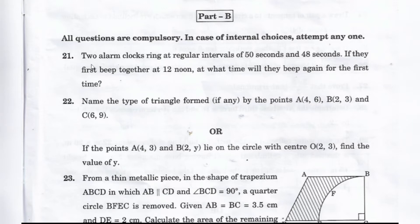Question 21: Two alarm clocks ring at regular intervals of 50 seconds and 48 seconds. If they first beep together at 12 noon, at what time will they beep again after the first time? Question 22: Name the type of triangle, if any, formed by points A(4,6), B(2,3), and C(6,9), and determine whether the triangle will be formed or not.